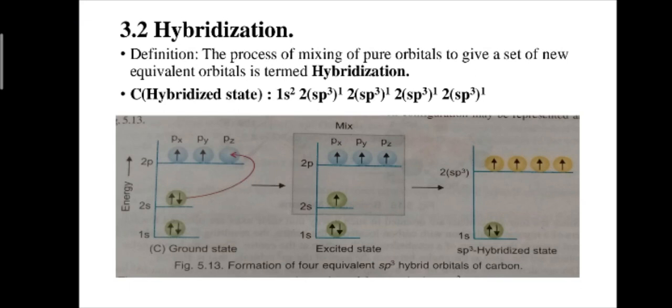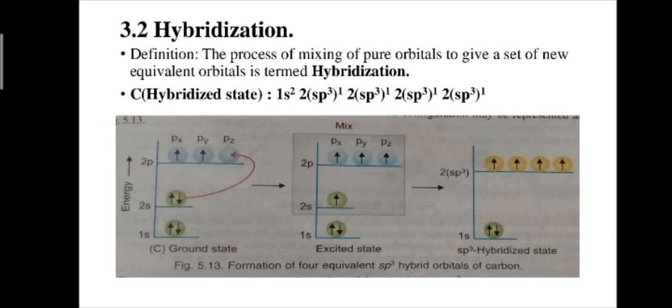What is meant by hybridization? The process of mixing of pure orbitals to give a set of new equivalent orbitals is termed hybridization. The atomic number of carbon is six. Carbon in its ground state has the electronic configuration 1s2 2s2 2px1 2py1 2pz0. In the excited state, its configuration is 1s2 2s1 2px1 2py1 2pz1.